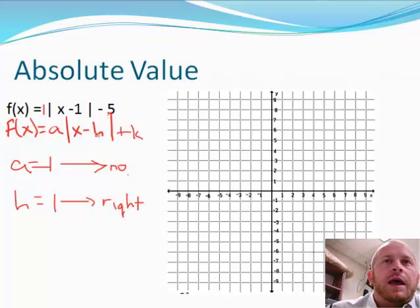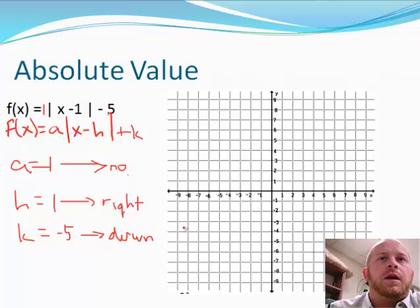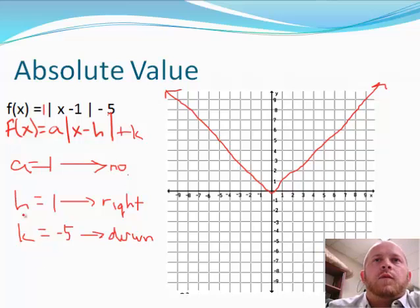And then our k is going to stay at a negative five, so that means we're going to go down because it's a negative, five spaces. Okay, so our original function for an absolute value is going to come down and create a V. Okay, we need to create our new one. We're going to change colors here again. There's no change in our size because there was a one in the a position. Your h is a one to the right, so we're going to go over one to the right for each one, and then down five.